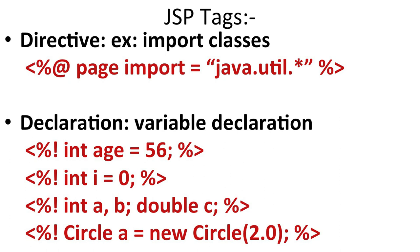To import java.math, you write: page import="java.math.*". Similarly, any class or package can be imported using this statement. Remember: percentage at-the-rate (<%@) is for page import. The second tag category is declaration. After the import statement, we declare variables. The percentage exclamation sign (<%!) is used for declaration. For example: int age = 56, i = 0, and integer variables a and b without initial values.